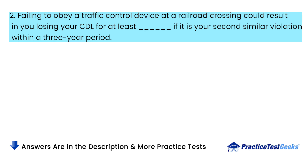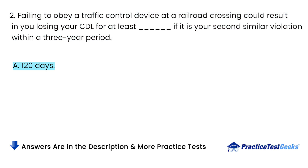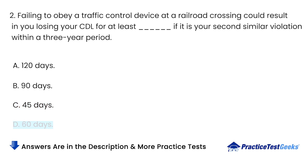Failing to obey a traffic control device at a railroad crossing could result in you losing your CDL for at least how long, if it is your second similar violation within a three-year period? A. 120 days. B. 90 days. C. 45 days. D. 60 days.